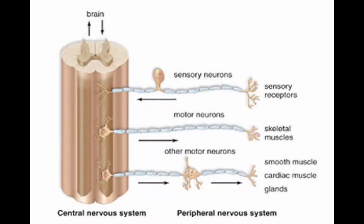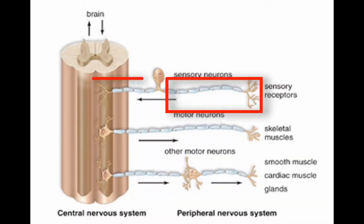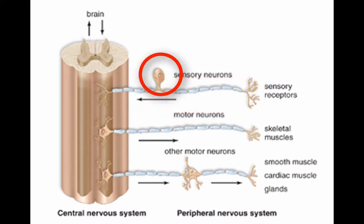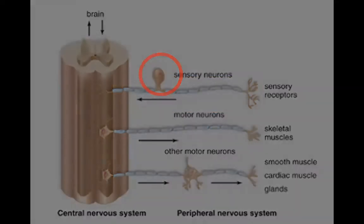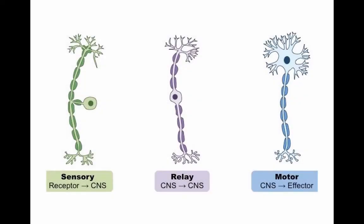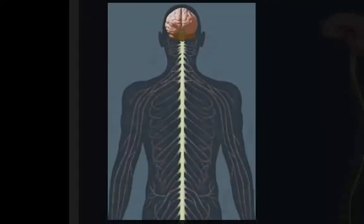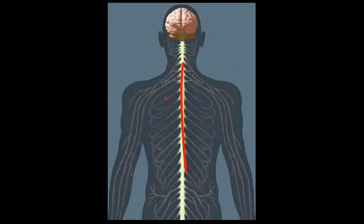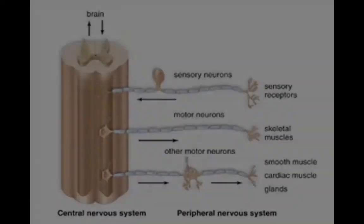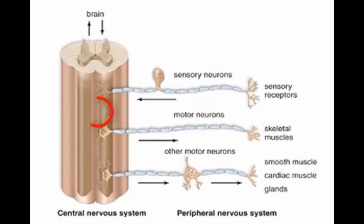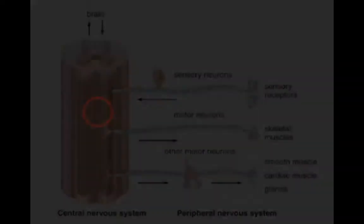Typically, sensory neurons have long dendrites and long axons, with their cell bodies found outside the central nervous system of the spinal cord or brain. Next is the interneuron, which is the neuron found in the spinal cord and the brain. These neurons will relay impulses up the spinal cord to the brain, where the electrical impulse will be processed and interpreted. These neurons can vary in length, but their axons, dendrites, and cell body all reside entirely in the spinal cord or the brain.